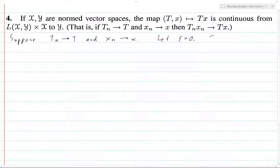So choose n1 such that for all n greater than or equal to n1, xn minus x is strictly less than epsilon over 2 times the norm of t plus 1.